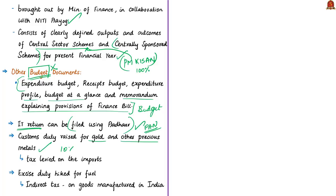The article also states that customs duty on gold and other precious metals has been increased from 10% to 12.5%. Customs duty is the tax levied on imports. The excise duty for fuel has been hiked by ₹1 — excise duty being an indirect tax levied on goods manufactured in India and meant for home consumption.